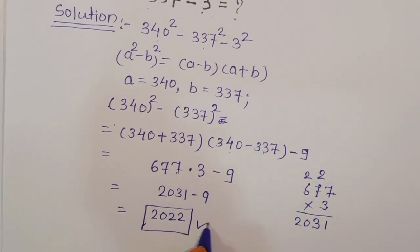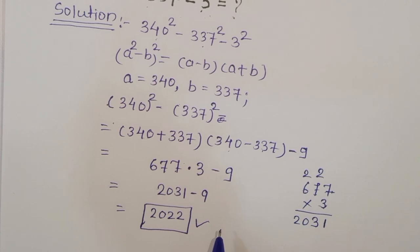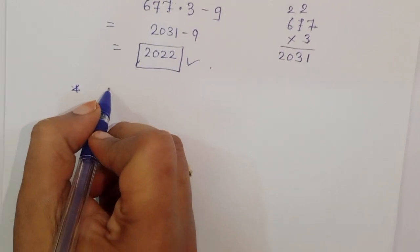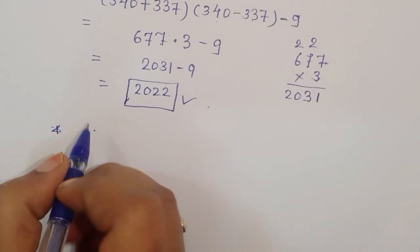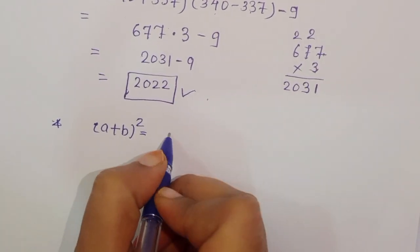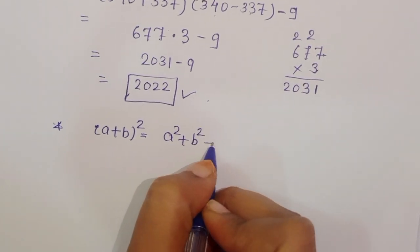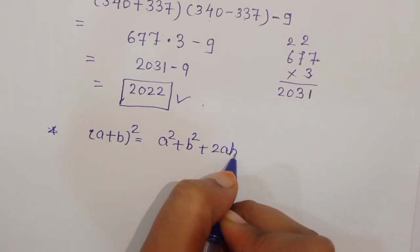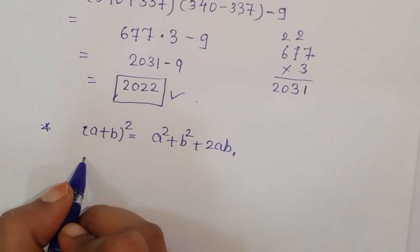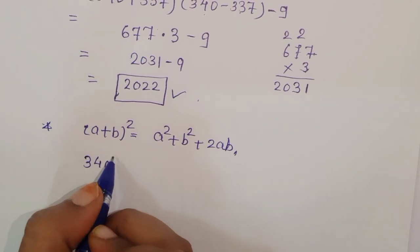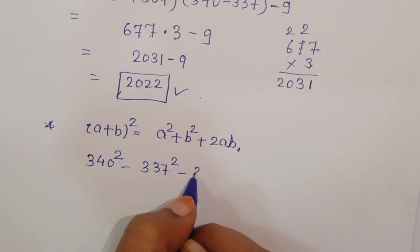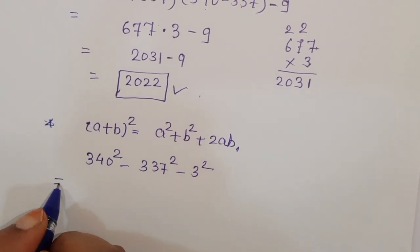This is the first method. For a second approach, we can use the formula (a plus b) whole square equals a square plus b square plus 2ab. We can rewrite 340 square as (337 plus 3) whole square.